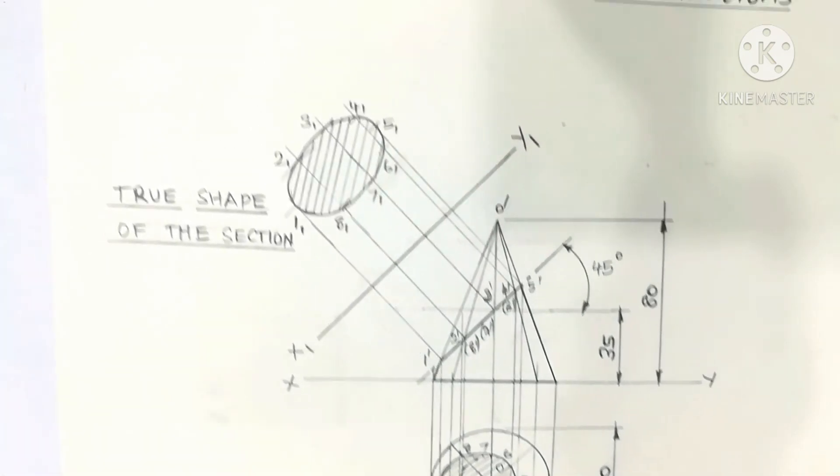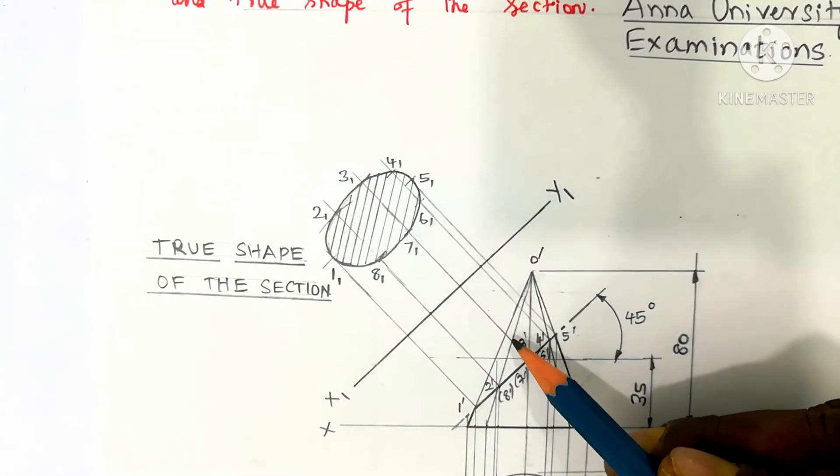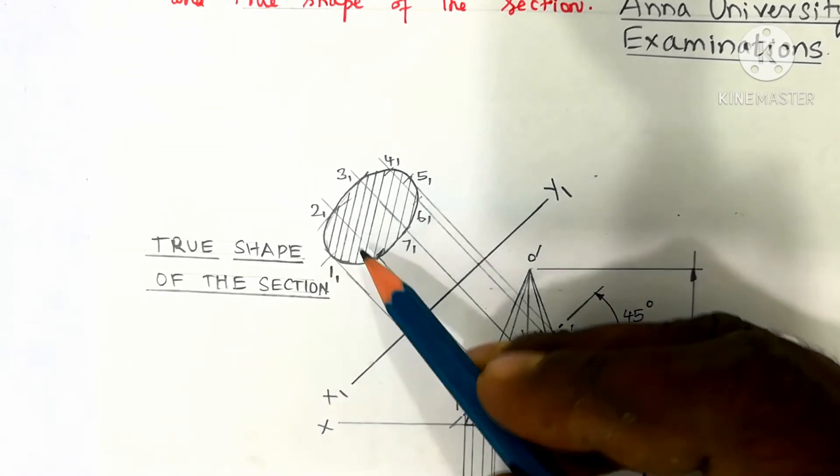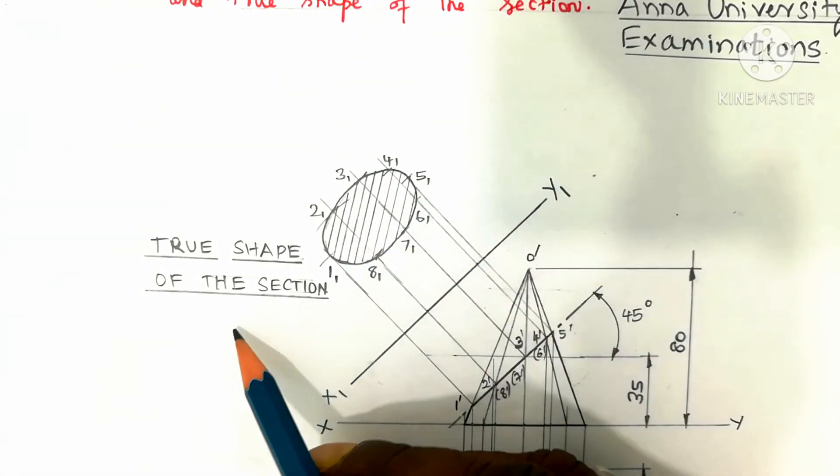Next, true shape of the section will be ellipse. The cut portion is perpendicular to the cut surface, it seems as an ellipse. It is called true shape of the section.